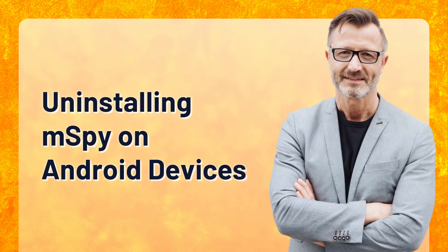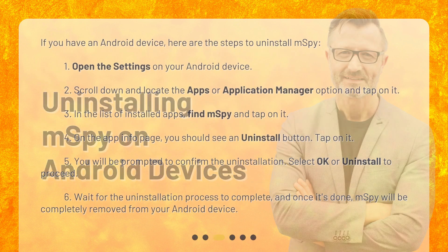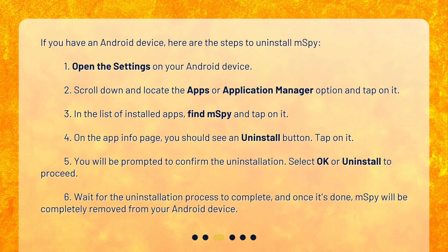Uninstalling MSPY on Android Devices. If you have an Android device, here are the steps to uninstall MSPY. Step 1: Open the Settings on your Android device. Step 2: Scroll down and locate the Apps or Application Manager option and tap on it. Step 3: In the list of installed apps, find MSPY and tap on it. Step 4: On the App Info page, you should see an Uninstall button. Tap on it.